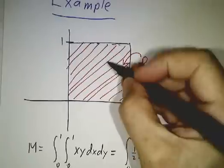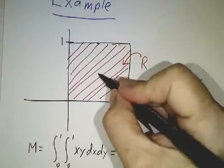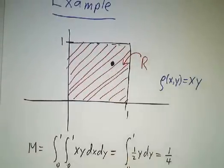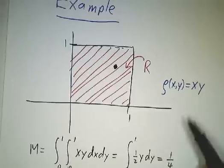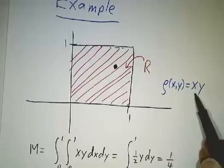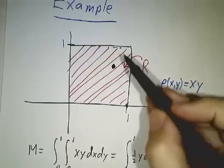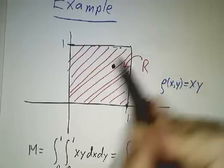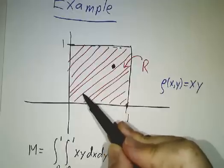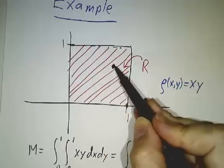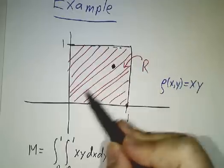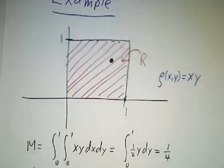So the center of mass is not in the middle — it's somewhere around the point (2/3, 2/3). Because the density is xy, the points in the upper right are a lot heavier than the points in the lower left. So the center of mass is closer to the upper right-hand corner than to the lower left-hand corner.